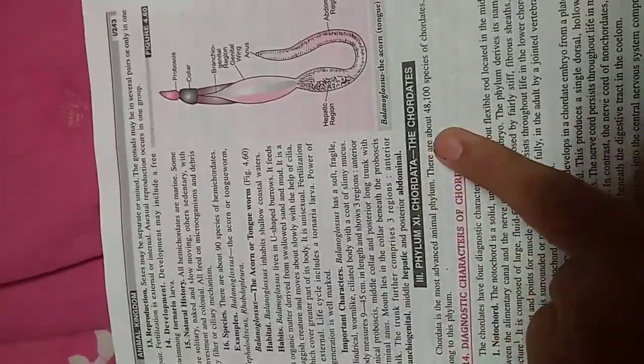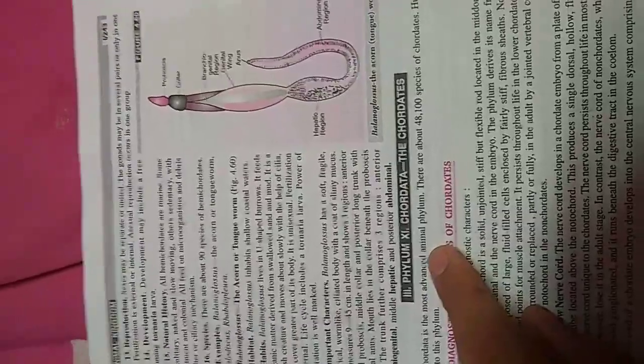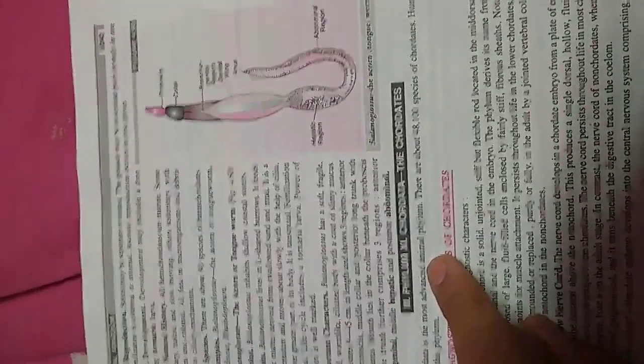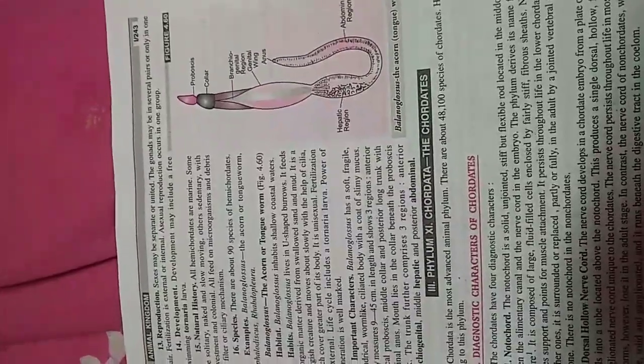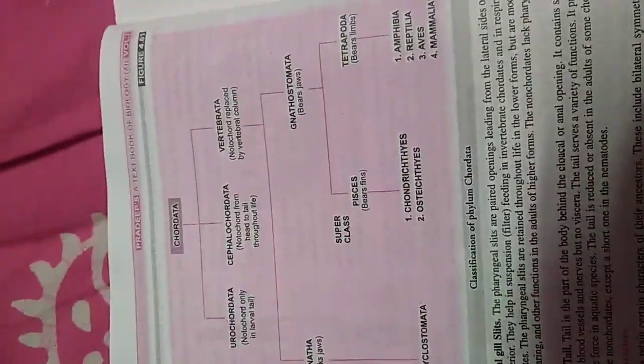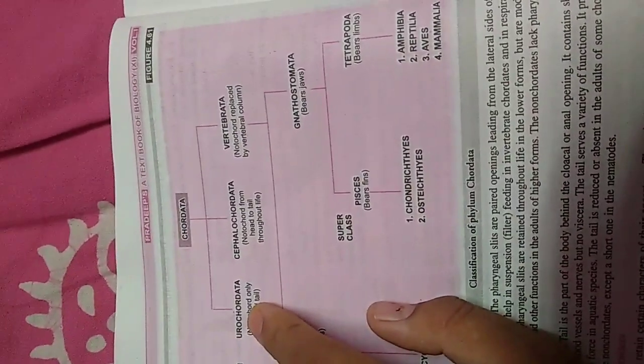The next phylum is Chordata. This is the largest and most advanced animal phylum. There are about 48,100 species of Chordata and humans belong to this phylum. Chordata is divided into three subphyla: Urochordata, Cephalochordata, and Vertebrata.